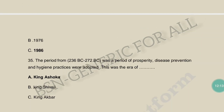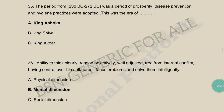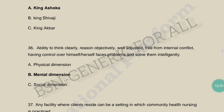The period from 236 BC to 72 BC was a period of prosperity in which disease prevention and hygiene practices were adopted. This was the era of King Ashoka — during King Ashoka's era, disease prevention and hygiene practices were adopted.